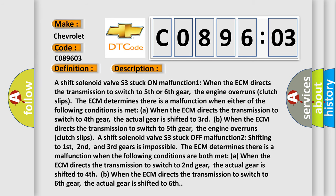A shift solenoid valve S3 stuck on malfunction 1. When the ECM directs the transmission to switch to fifth or sixth gear, the engine overruns clutch slips. The ECM determines there is a malfunction when either of the following conditions is met: when the ECM directs the transmission to switch to fourth gear, the actual gear is shifted to third B, or when the ECM directs the transmission to switch to sixth gear, the engine overruns clutch slips.